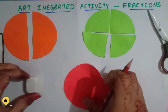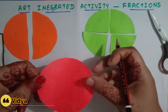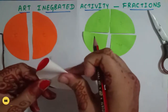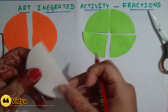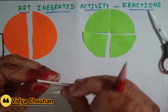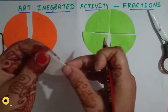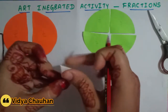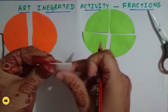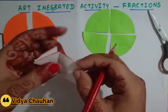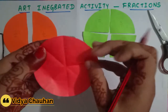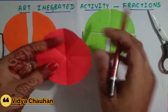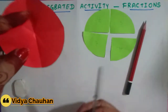Now the third disc — I am going to divide it into eight equal parts. First fold gives half, one more fold gives one fourth, and one more fold gives one eighth. Let's check: one, two, three, four, five, six, seven, eight — yes, it is one eighth! Now it's time to cut it using the scissors.